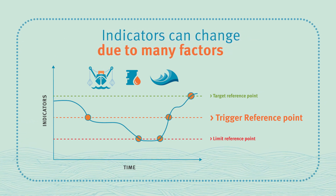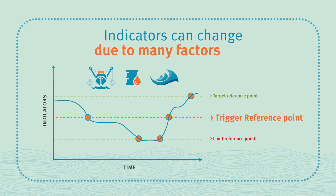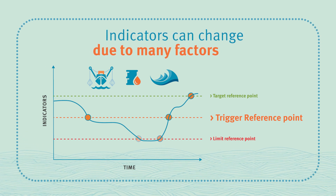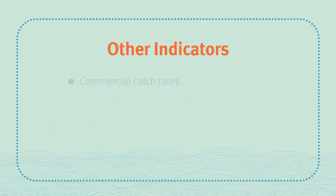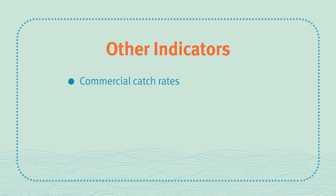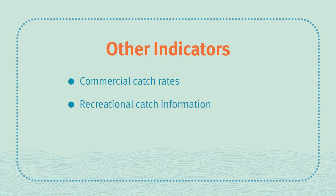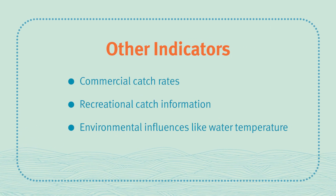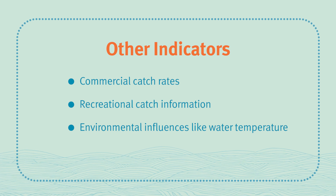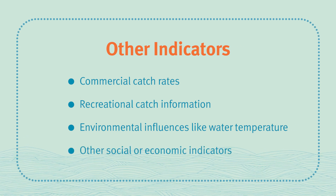Other indicators are also important, especially where limited data is available. These can include commercial catch rates, recreational catch information, environmental influences like water temperature, and other social or economic indicators.